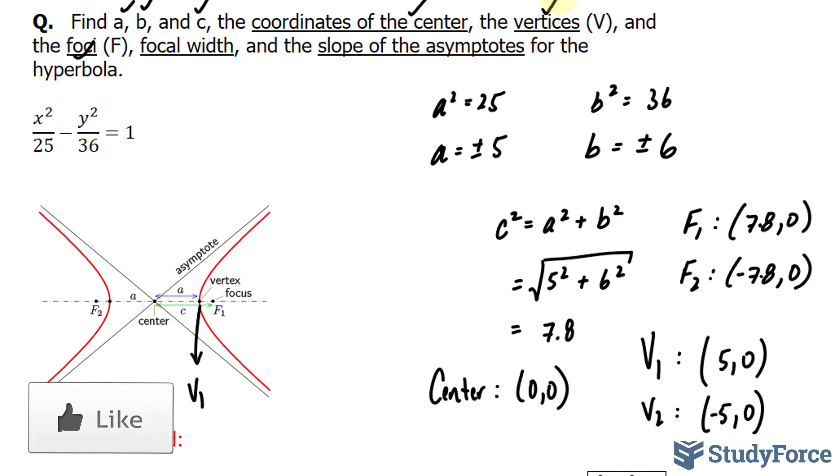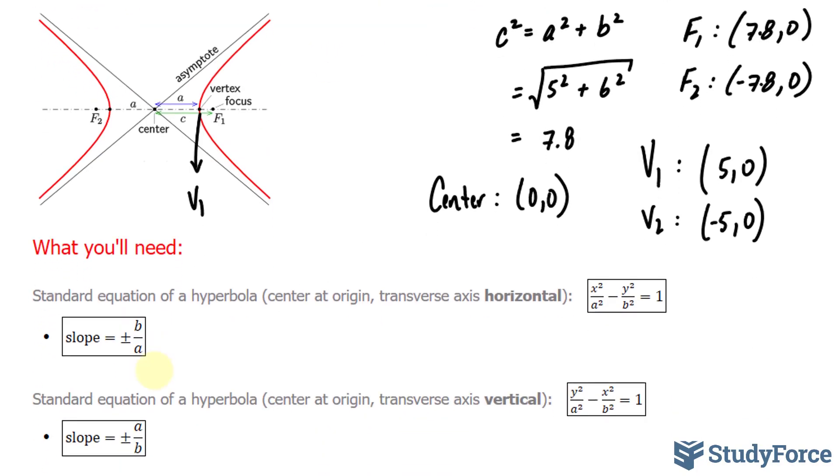To find the focal width, we need to use a special formula. And at the same time, we'll find the slope of the asymptotes by using this formula, b over a. And you only use b over a when the transverse axis is horizontal, in which our case it is.